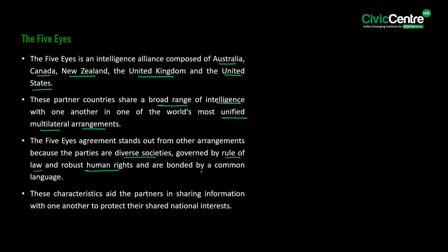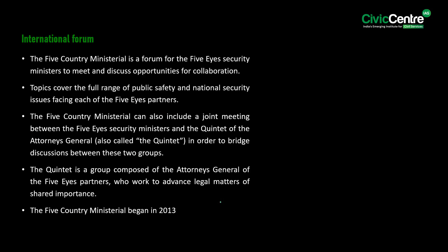These characteristics aid the partners in sharing information to protect their shared national interests. The Five Country Ministerial is a forum for Five Eyes Security Ministers to meet and discuss opportunities for collaboration, covering the full range of public safety and national security issues. It can also include a joint meeting between the Five Eyes Security Ministers and the Quintet of Attorney Generals — a group composed of the Attorney Generals of the Five Eyes partners who work to advance legal matters of shared importance. The Five Country Ministerial began in 2013.